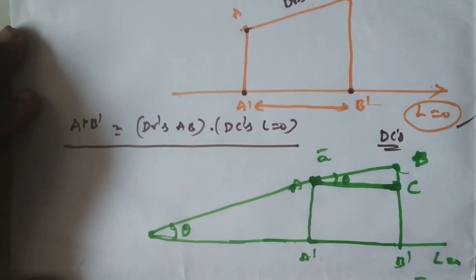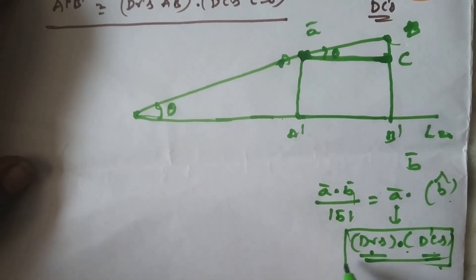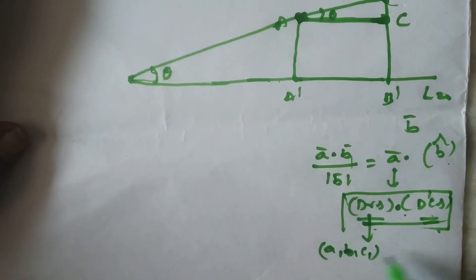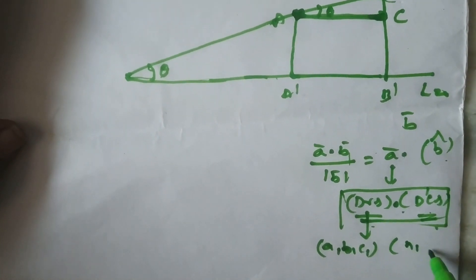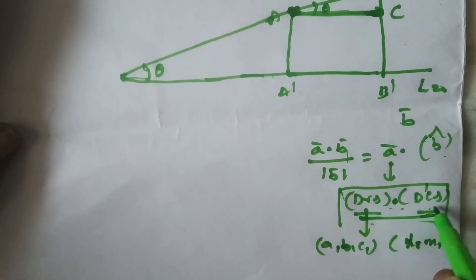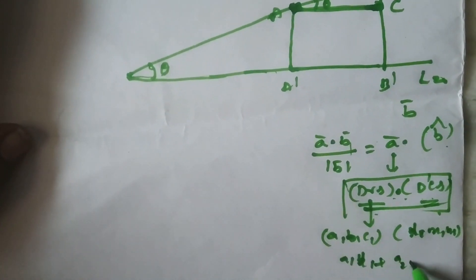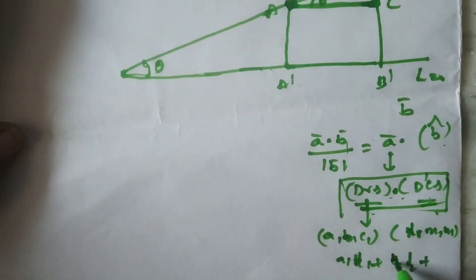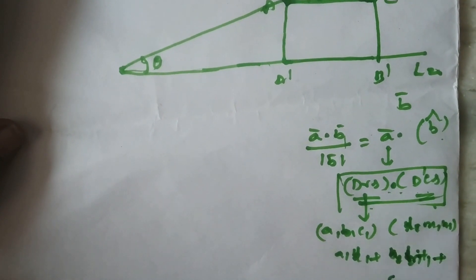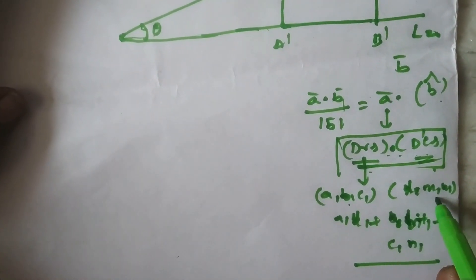This is not directly mentioned in any textbook. By DRs dot DCs we mean: suppose the direction ratios are A1, B1, C1 and the direction cosines are L1, M1, N1. Then direction ratios dot direction cosines means A1·L1 + B1·M1 + C1·N1.